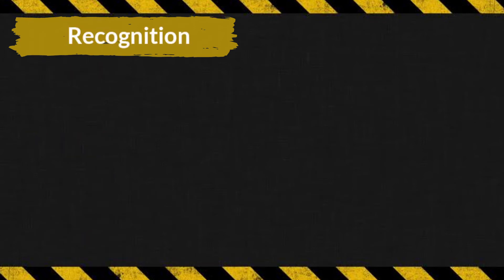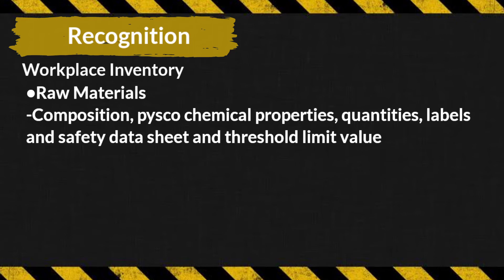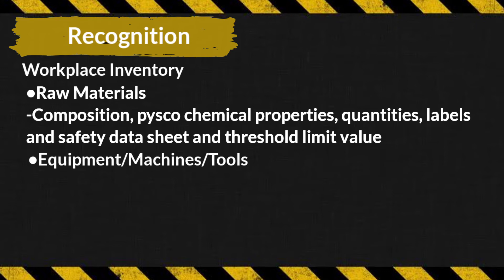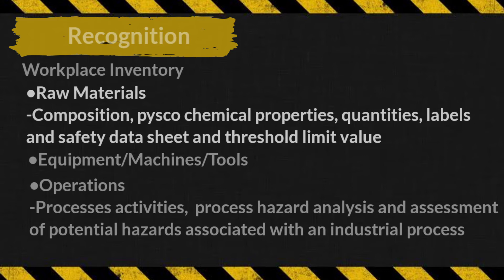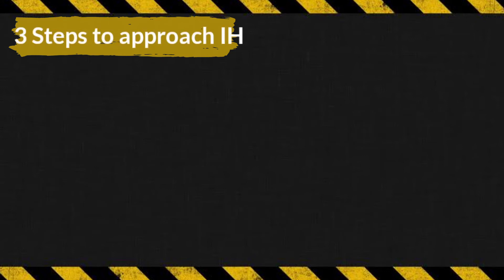In the recognition step, we have workplace inventory covering raw materials — including composition, physicochemical properties, quantities, labels, safety data sheet, and threshold limit value — as well as equipment, machines, tools, and operations. Under operations, we have processes, activities, process hazard analysis, and assessment of potential hazards associated with an industrial process.